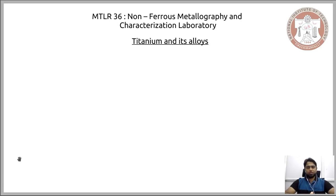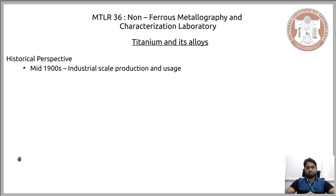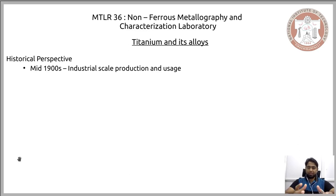Welcome to another theoretical lecture on non-ferrous metallography and characterization techniques. This lecture focuses on titanium and its alloys. Titanium bears similarity to magnesium and aluminum, particularly regarding the period during which they began to be produced at industrial scale. Magnesium and aluminium's industrial scale production began in the early 1900s, while titanium's industrial scale production began only in the mid-1900s, right around the 1940s.